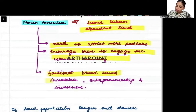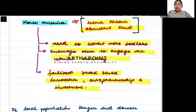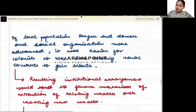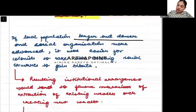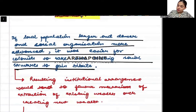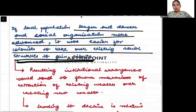They wanted to facilitate broad innovation, entrepreneurship, and investment. Here, because there was a lot of land, a lot of capital, it was a rich country — it could facilitate innovation, entrepreneurship, and investment. If the local population is larger, denser, and social organization is more advanced, it was easier for colonies to take over the existing social structure and gain tribute.